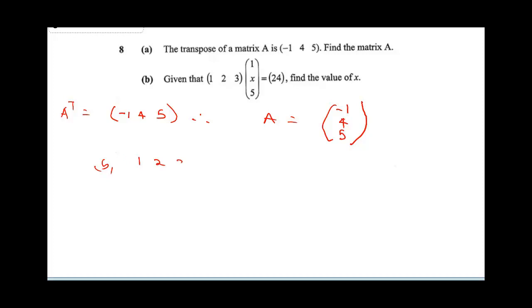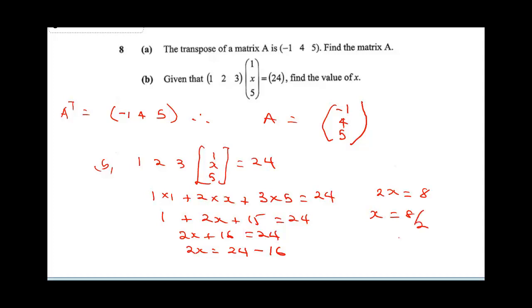Given that (1, 2, 3) into (1, x, 5) is equal to 24, find the value of x. We're going to multiply this matrix. It's going to be 1 times 1 plus 2 times x plus 3 times 5, which is equal to 24. So this is going to be 1 plus 2x plus 15, which is 24. This is going to be 2x plus 16, which is equal to 24. Collecting our like terms, 2x is going to be 24 minus 16. 2x is going to be 8. Therefore, our x is going to be 8 over 2 and that will give us 4.